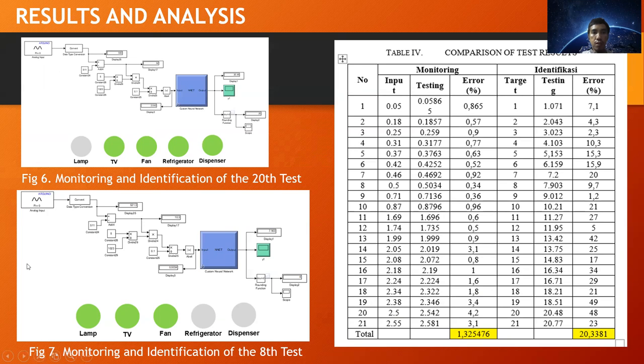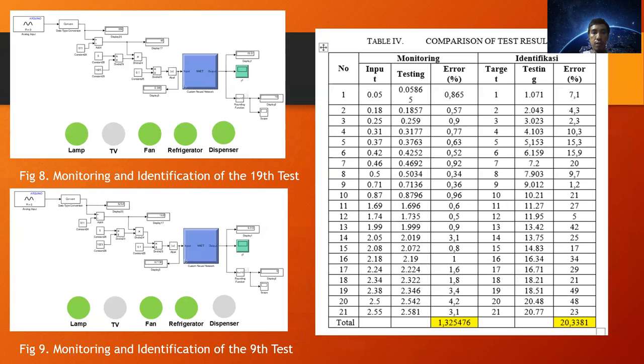In this slide, we divide two figures. For the first, fig 6 until fig 7 is the monitoring results. We describe the monitoring, four combination load. And the fig 7 is three combination load. Next, for the testing results in figure 8 until figure 9, this is the testing of the system.